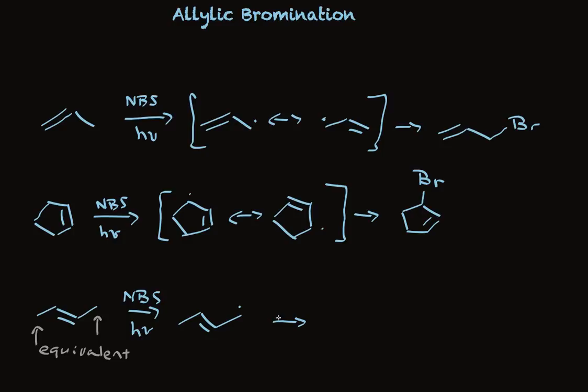But when we write the second resonant structure, we see that's not equivalent to the first. They are different structures, and they will lead to different product. So in a case like this, when we have two resonant structures that are different, we can expect mixtures of allylic bromides.